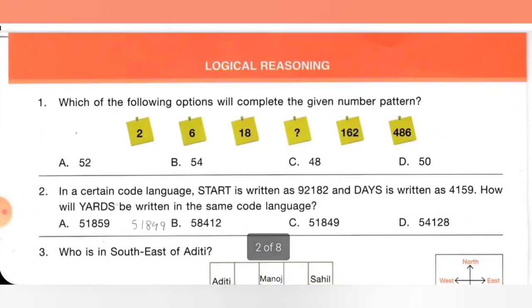First section is logical reasoning. First one: which of the following options will complete the given number pattern? 2, 6, 18, 54, 162, 486. Option A: 52, B: 54, C: 48, D: 50. Here, they are multiplying by 3. So 2 × 3 = 6, 6 × 3 = 18, 18 × 3 = 54. They are multiplying 3 with the given number to get the next number. So the correct answer is 54, option B.